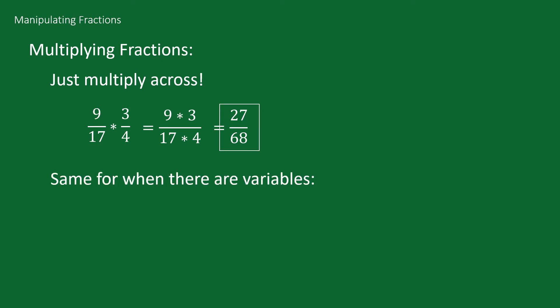And it's the same for when there are variables. If we had x over 5 times 2x squared over 3, that would be x times 2x squared over 5 times 3, and that would give us our answer of 2x cubed over 15.